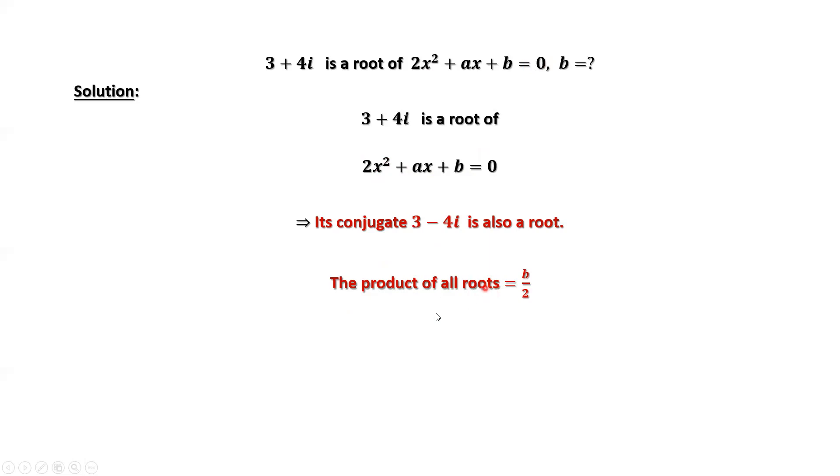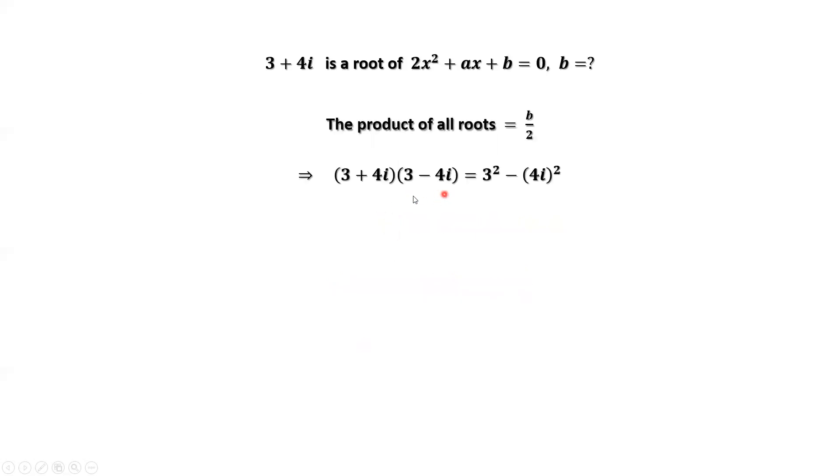What is the left-hand side? We have two roots here. The product of the two roots is 3 plus 4i times 3 minus 4i. a plus b, a minus b. We use the formula a squared minus b squared. Simplify this part.